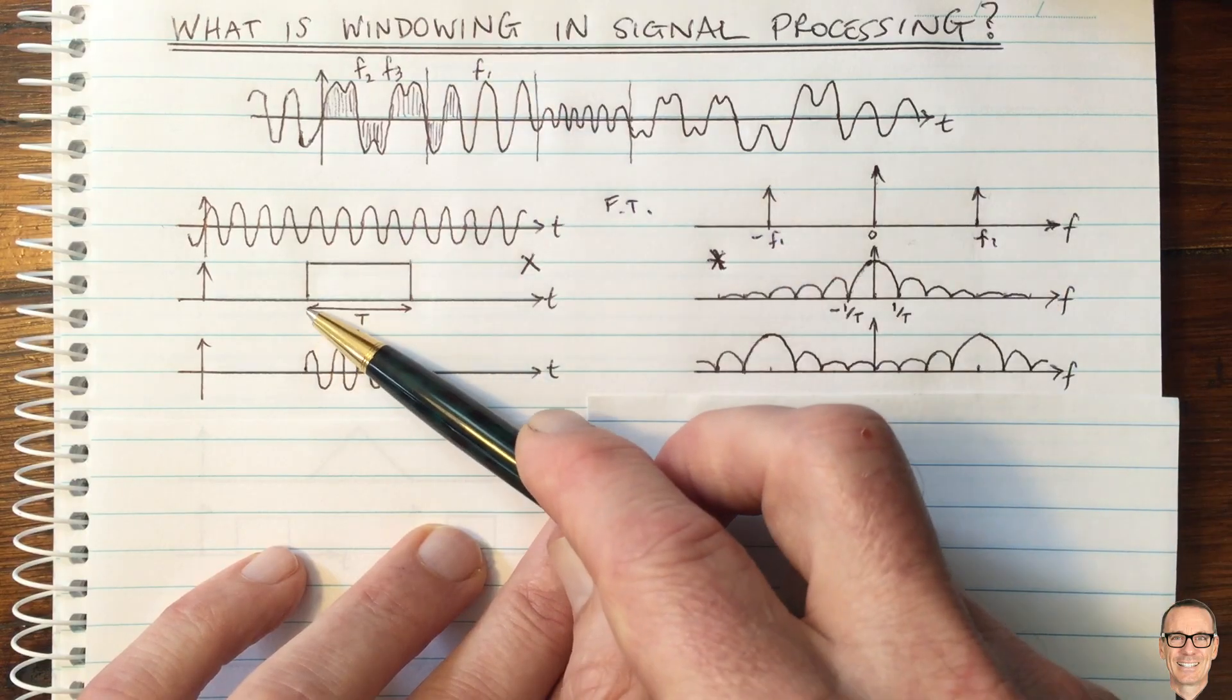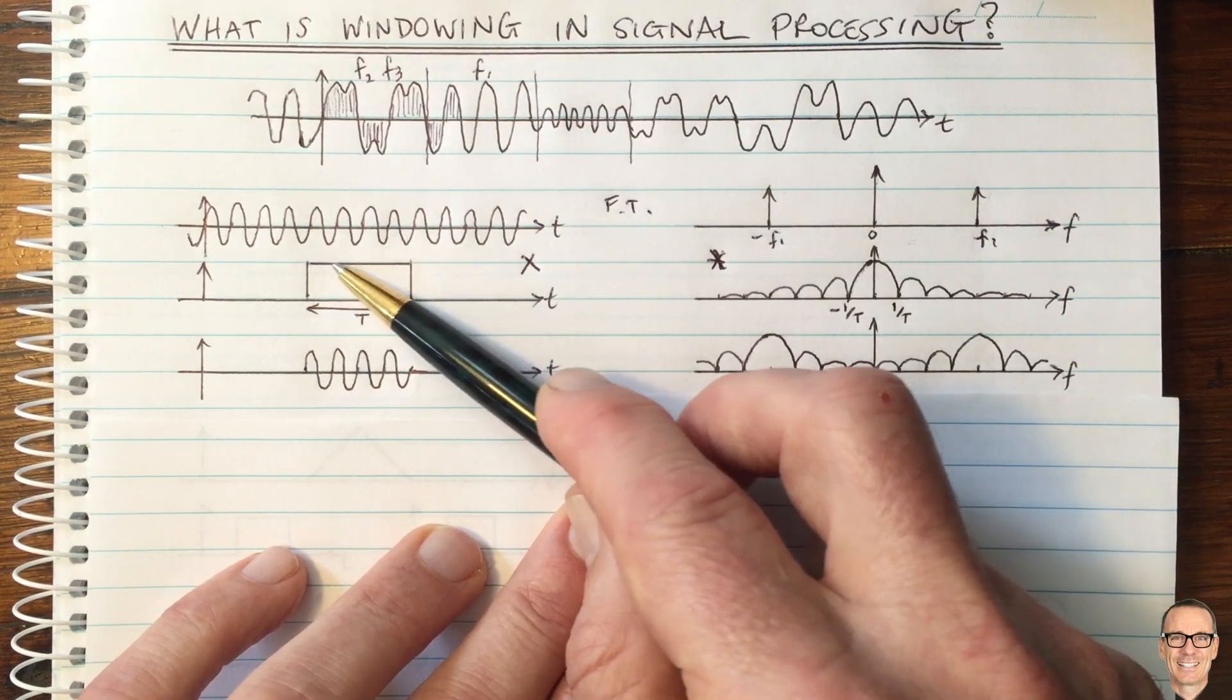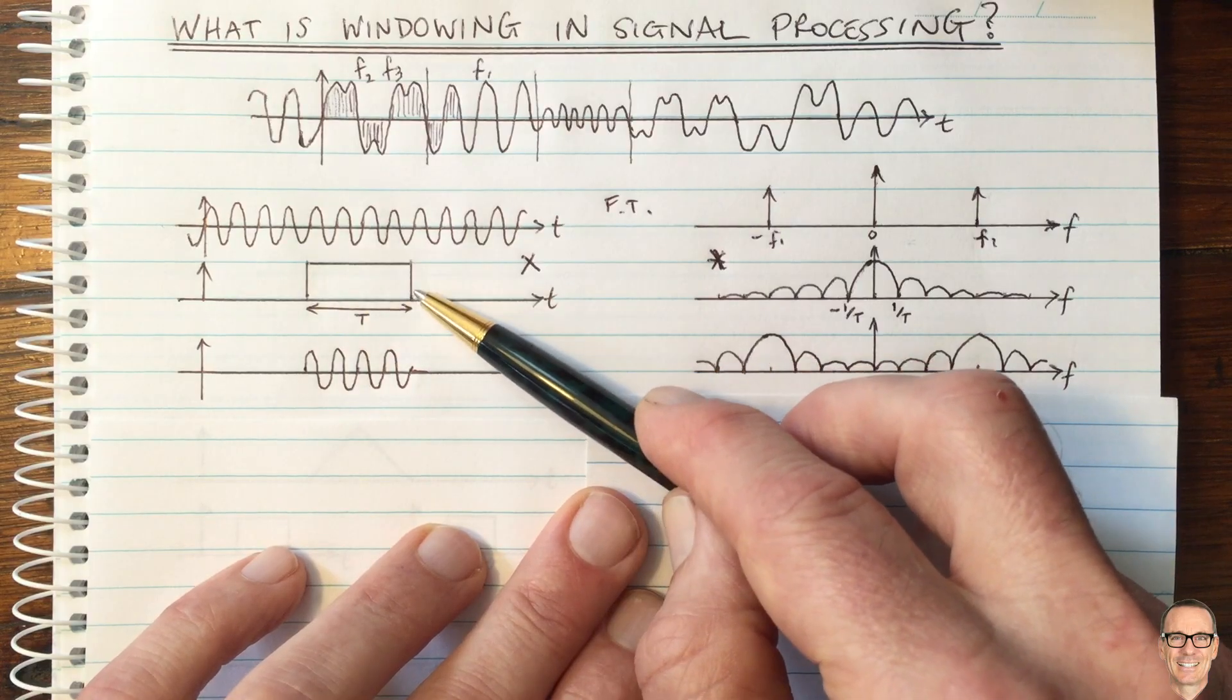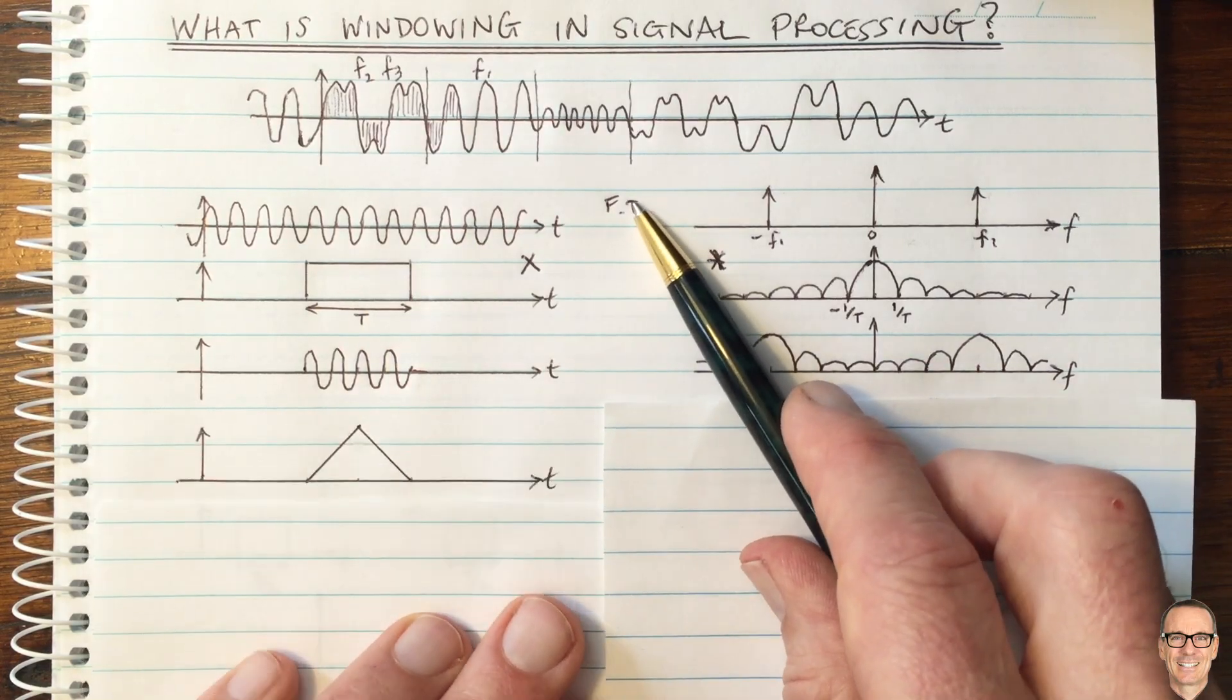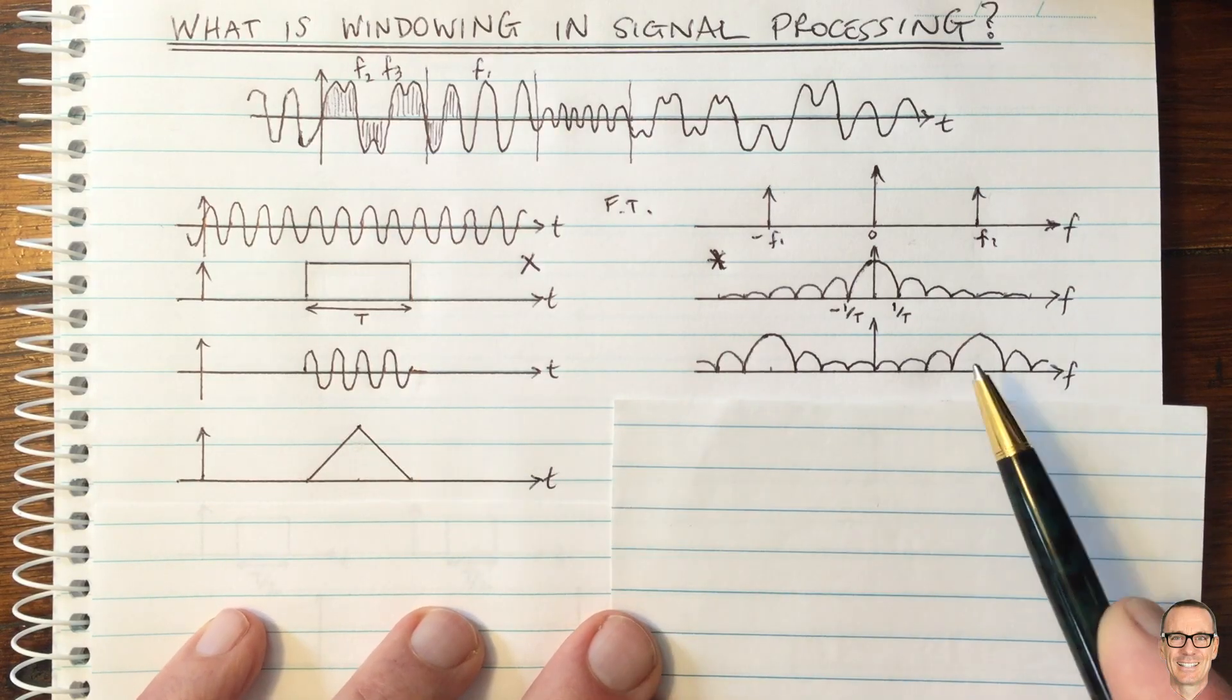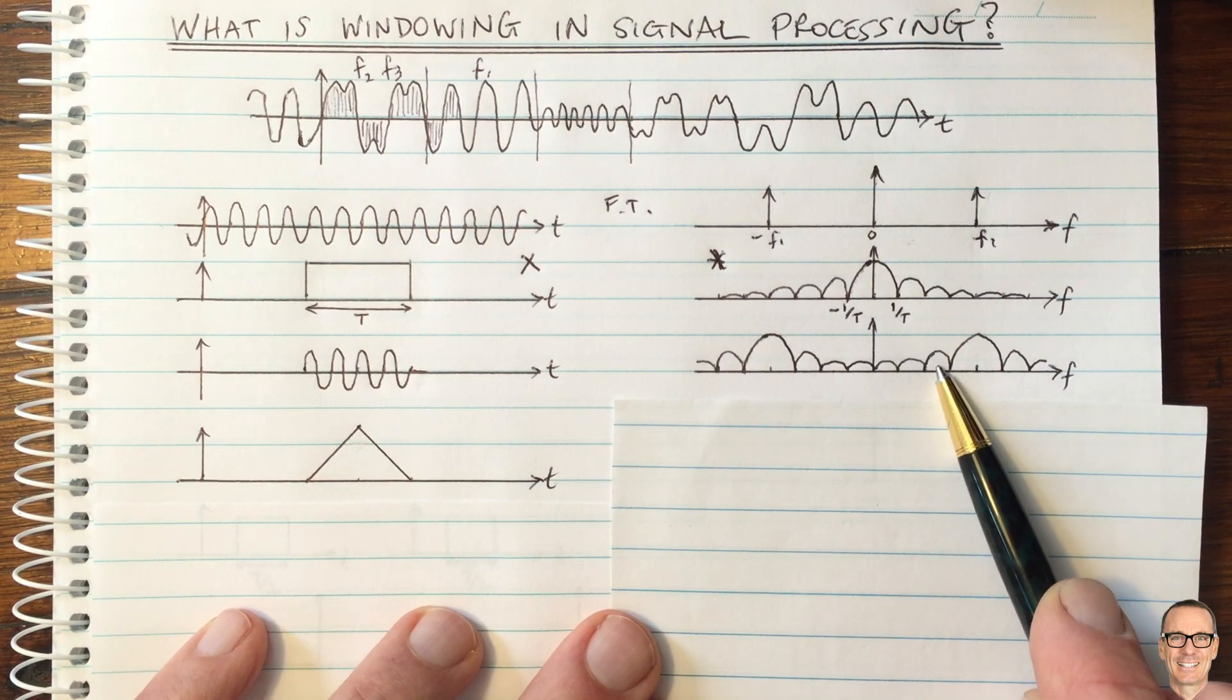Okay, so let's think about what we could do instead of just this rectangular window. Perhaps we could do different shapes. And for example, let's consider this shape here to try to understand what's possible and what the effect is going to be on the side lobes.